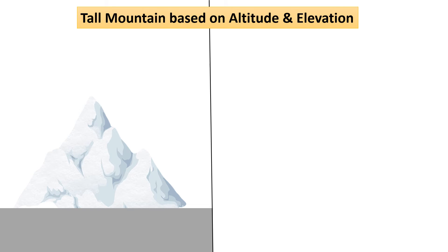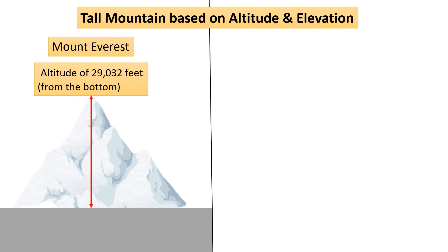Now let's talk about tall mountains based on altitude and elevation. As you know, Mount Everest is the highest mountain on earth with an altitude of 29,032 feet above sea level — it is the highest point on earth's surface.